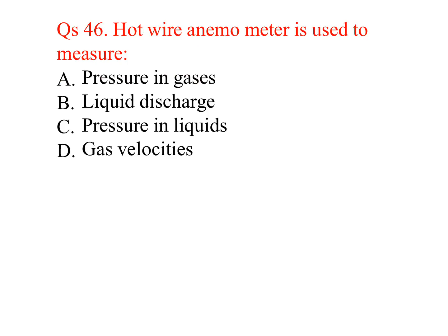A hot wire anemometer is used to measure: pressure in gases — no; liquid discharge — no; pressure in liquids — no; gas velocity — yes. Option D, gas velocity, is the answer.